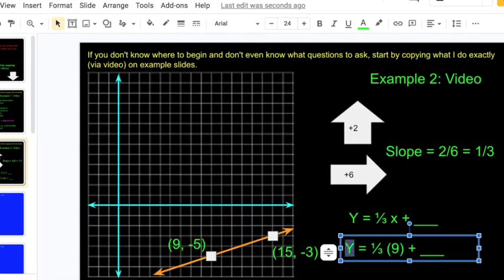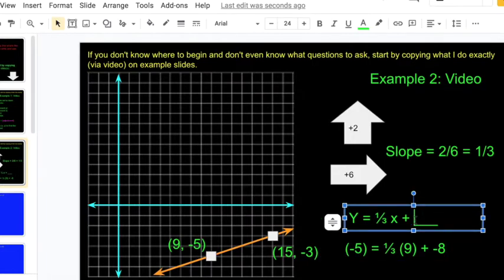When x is 9, y should be negative 5. 1 third of 9 is 3. In order to get down to negative 5, I'm going to need to subtract 8. That's my adjustment.